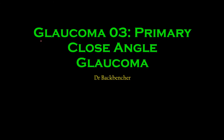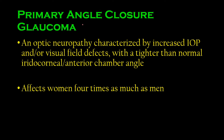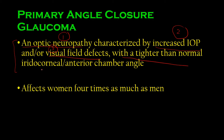Hey everyone, Dr. Backbencher here. Today we'll be studying primary angle closure glaucoma. In the previous lecture we studied primary open angle glaucoma; here the angle is closed. Primary angle closure glaucoma is an optic neuropathy characterized by increased intraocular pressure and visual field defects, with a tighter than normal angle — unlike the previous type where the angle was normal. It affects women four times as much as men.